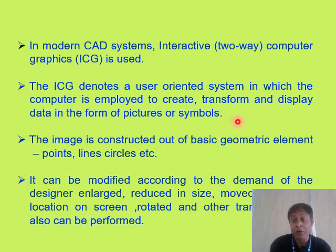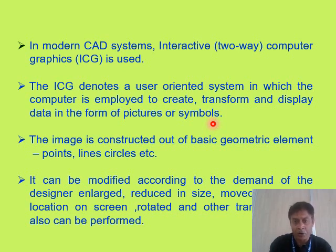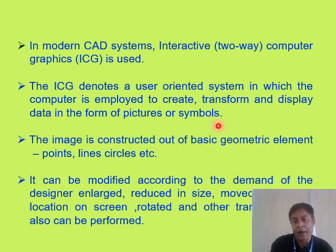ICG denotes a user-oriented system in which the computer is employed to create, transform and display data in the form of pictures or symbols. These computer-aided drawing packages are considered as user or designer-oriented systems in which you take the help of a computer to create the drawing, transform it — that is, enlarge it, decrease it, create a mirror image — and display the data. Whatever data you want, you can display it either in the form of pictures or symbols. For example, to show the diameter, you can use the symbol Ø in place of writing it out.